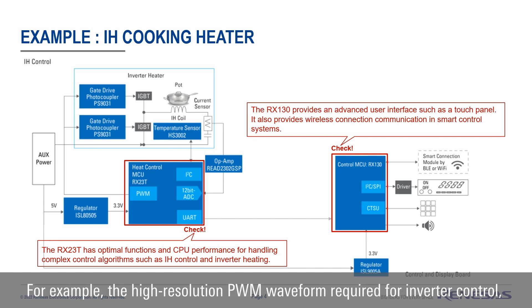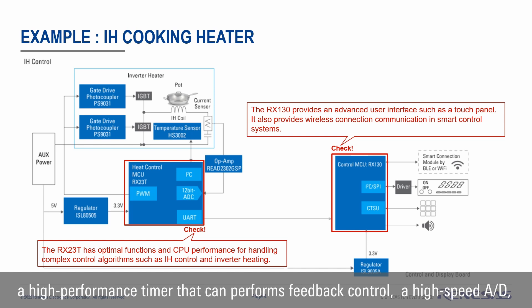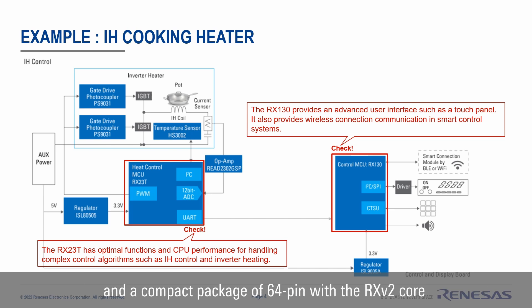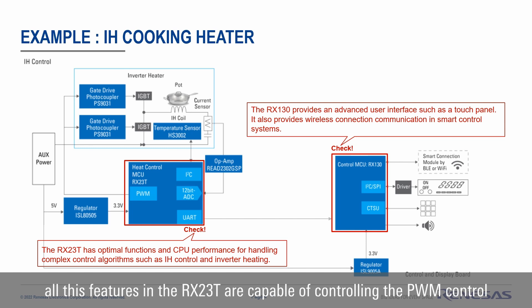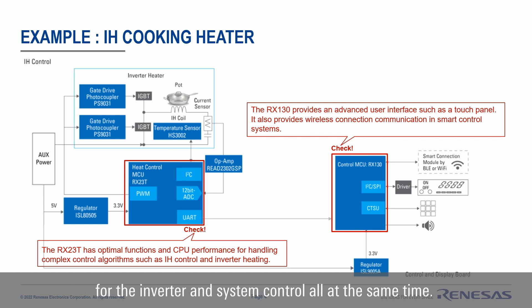For example, the high-resolution PWM wave required for inverter control, a high-performance timer that can perform feedback control, a high-speed ADC, and a compact package of 64-pin with the RX2 core mounted at 40MHz performance. All these features in the RX23T are capable of controlling the PWM for the inverters and the system control all at the same time.